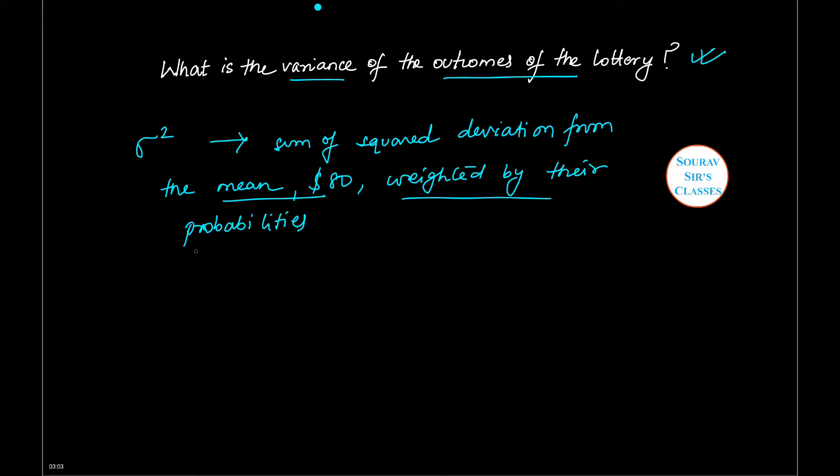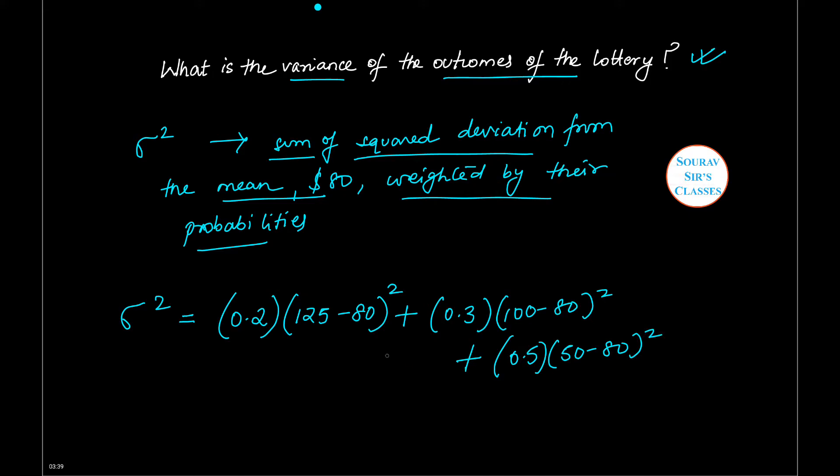So sigma square means you take the probability, you take the monetary outcome, the deviation from the mean (80 is the mean) and you square it. Then you have 100 minus 80 squared, plus 0.5 times 50 minus 80 squared.